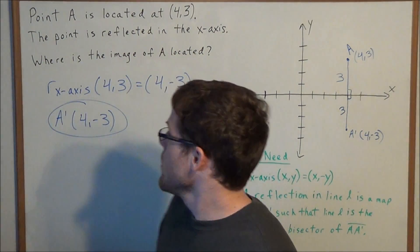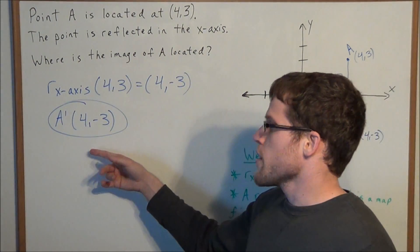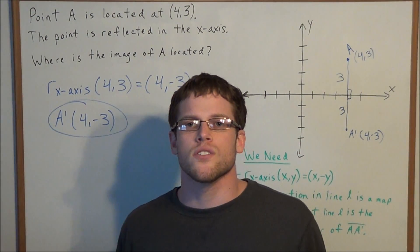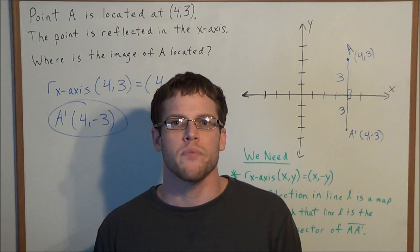So our answer: the image of A is located at (4,-3). This is going to conclude this reflection problem, as well as this video. Thank you all for watching, and I hope that it was helpful.